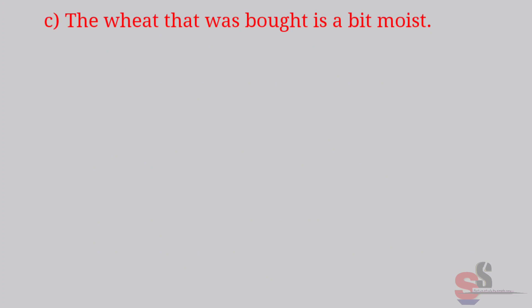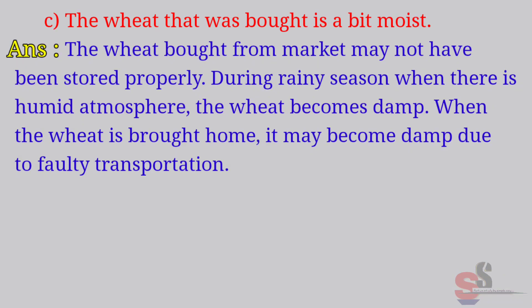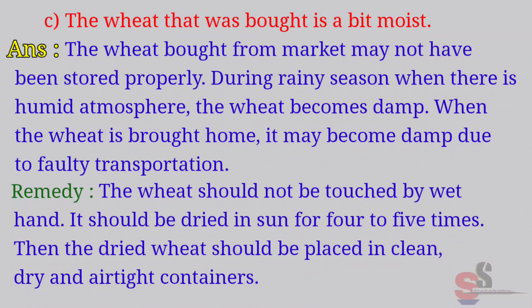C. The wheat that was bought is a bit moist. Answer: The wheat bought from market may not have been stored properly. During rainy season, when there is humid atmosphere, the wheat becomes damp. When the wheat is brought home, it may become damp due to faulty transportation. Remedy: The wheat should not be touched by wet hands. It should be dried in the sun for 4-5 times. Then the dried wheat should be placed in clean, dry and airtight containers.